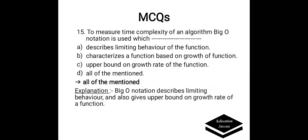To measure time complexity of an algorithm, big-O notation is used, which: a) describes limiting behavior of the function, b) characterizes a function based on growth of function, c) upper bound on growth rate of the function, or d) all of the mentioned. Correct answer is all of the mentioned. Big-O notation describes limiting behavior and gives the upper bound on growth rate of a function.